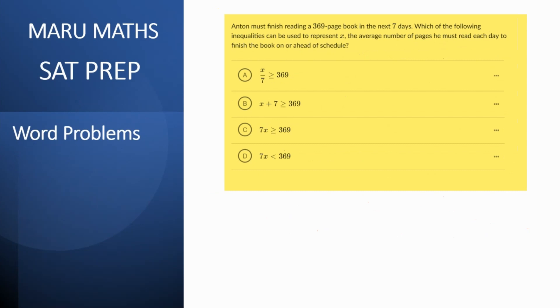Now the next question is Anton must finish reading a 369 page book in the next seven days. If x is the number of pages that he must read per day, then how many pages should he read to finish and we've all been there, we've all had to read books in a certain amount of time.